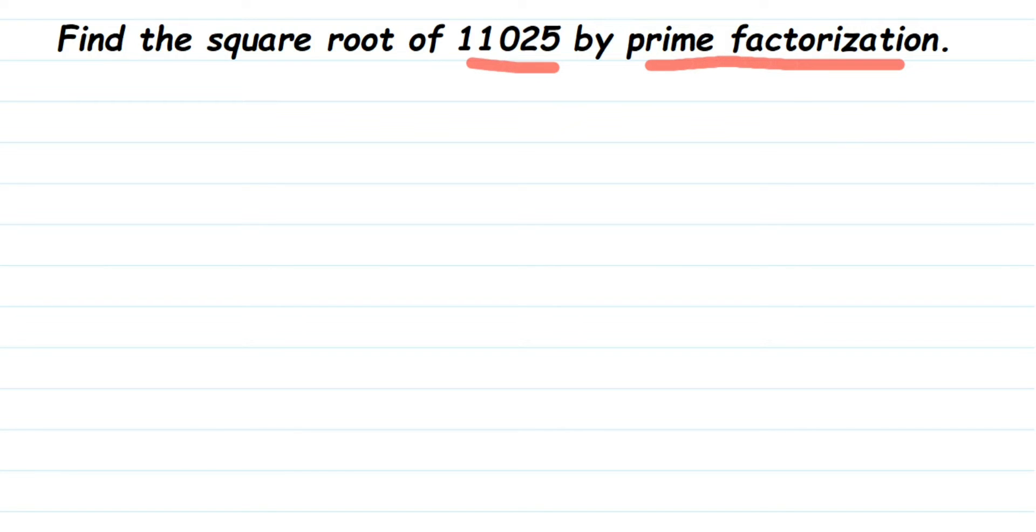What is this prime factorization? It means we have to express this number in terms of prime factors, and this can be done by division method. We're going to use a division method to do that. I'm going to divide this number with the prime numbers.